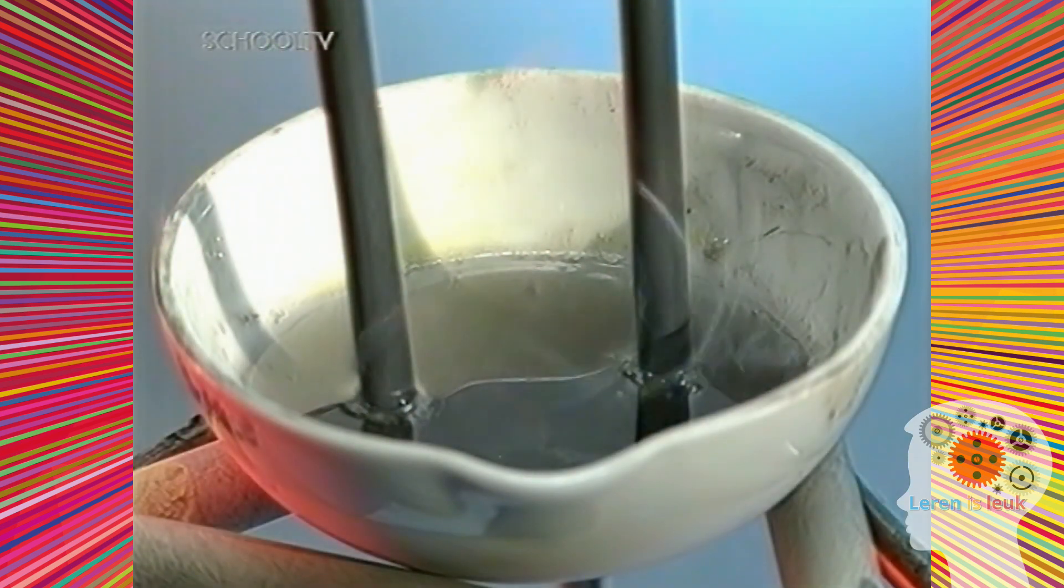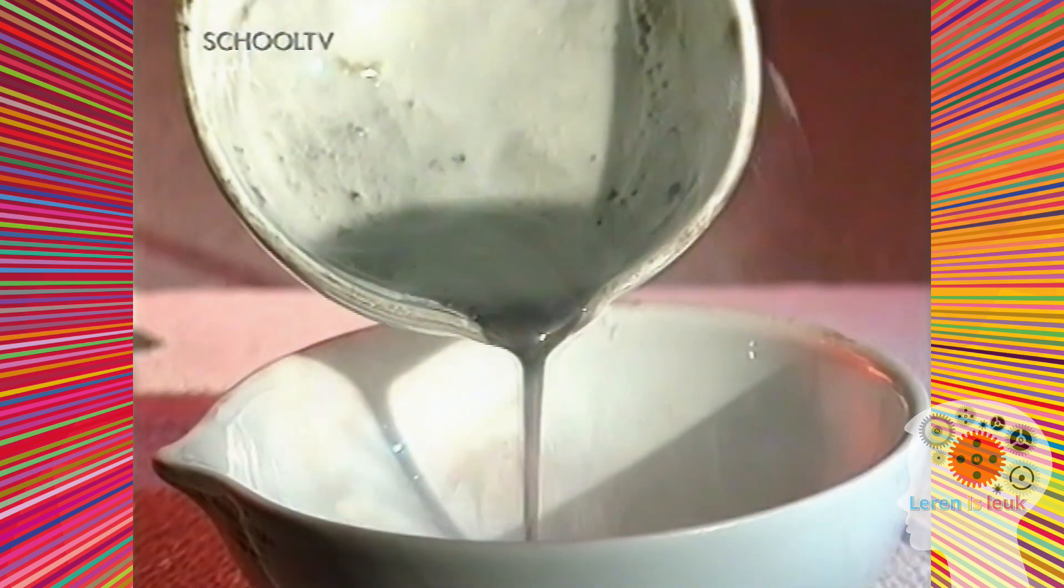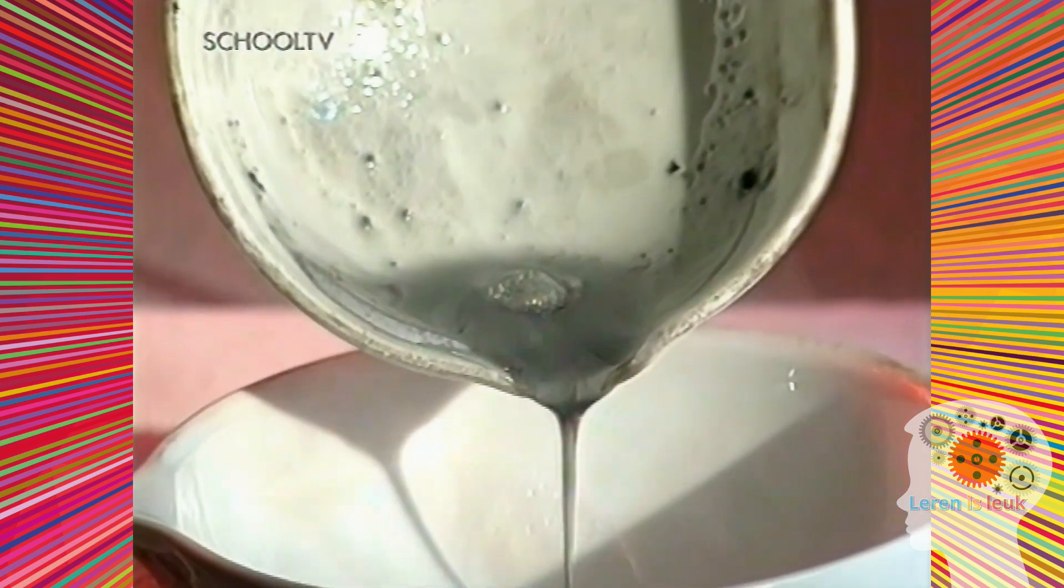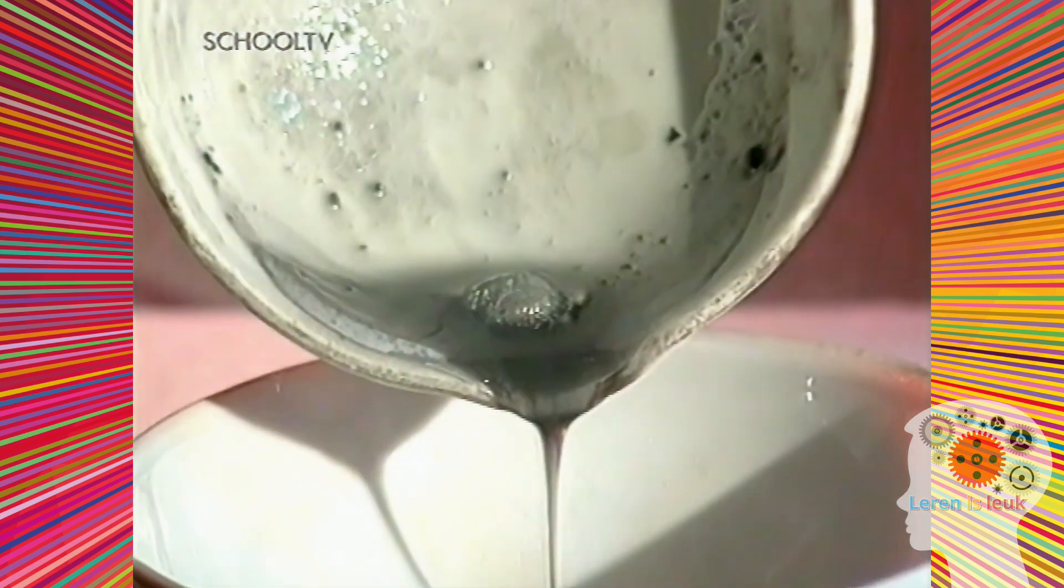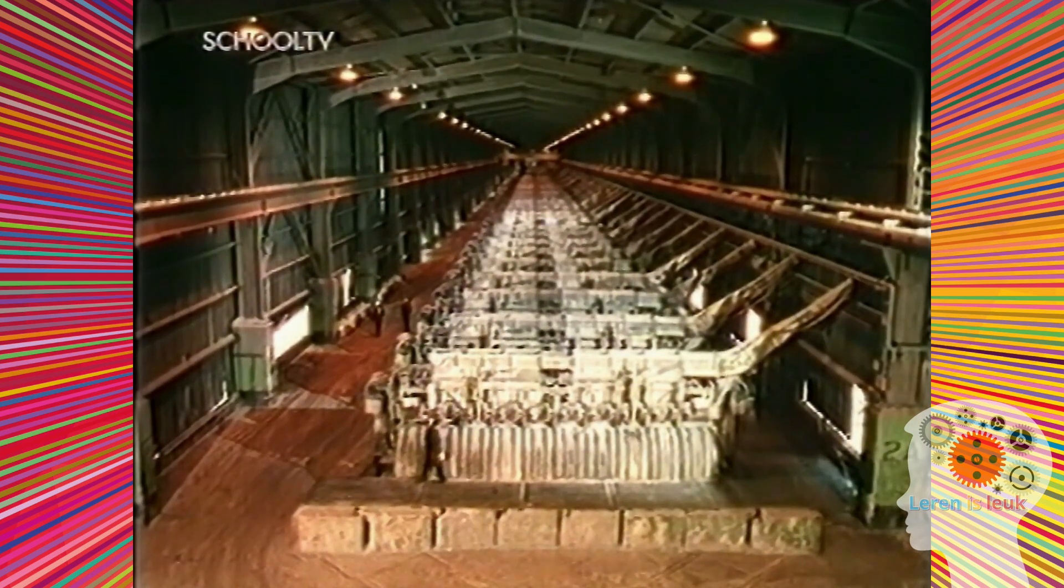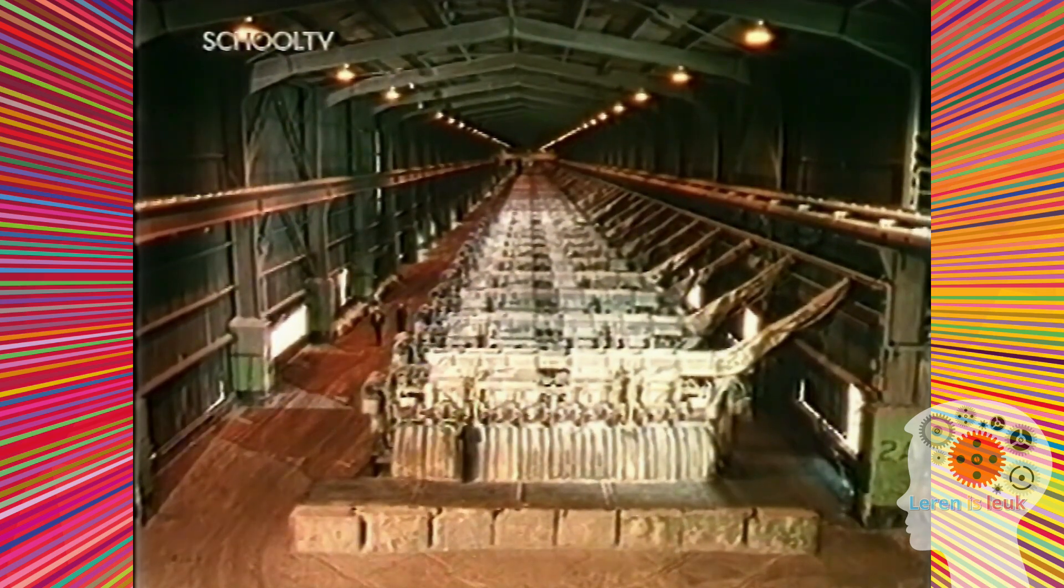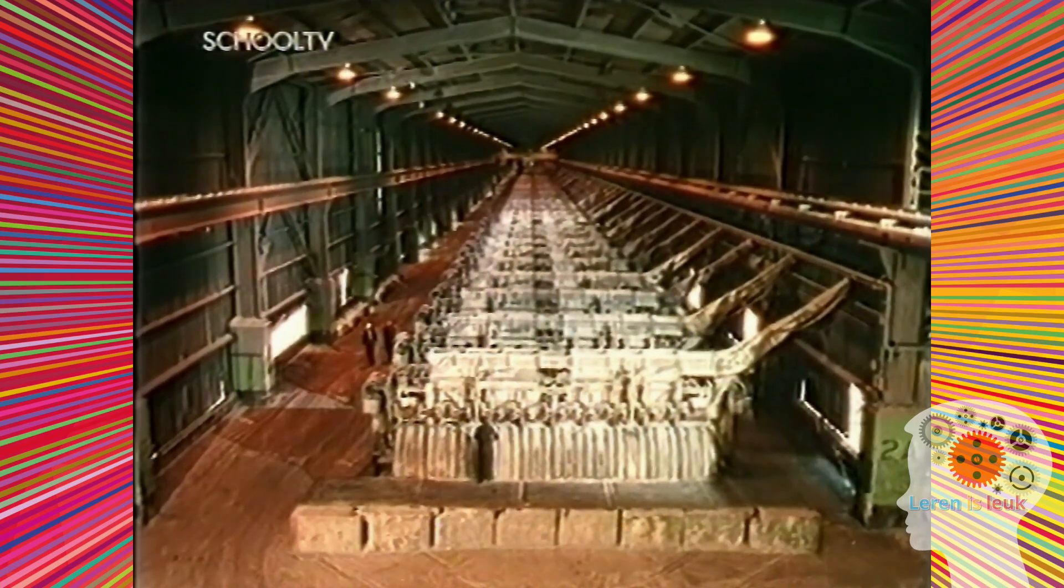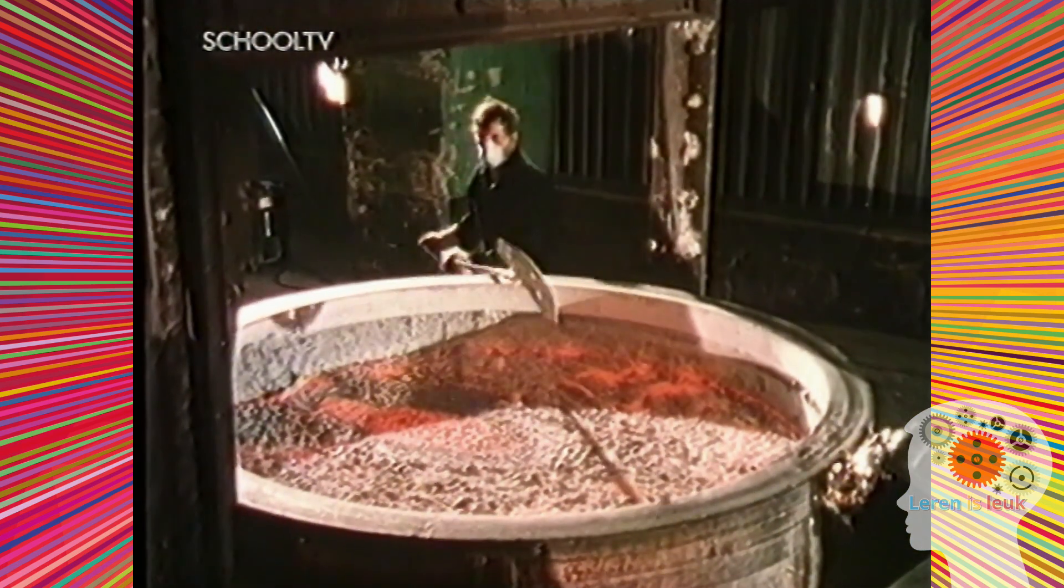Er lijkt weer niets te gebeuren bij de negatieve elektrode. Maar na het afgieten van de gesmolten zinkchloride zien we een druppel zuiver zink. In de industrie wordt elektrolyse op zeer grote schaal toegepast. Er wordt heel veel elektriciteit gebruikt om onedele metalen, zoals aluminium, uit hun erts vrij te maken.